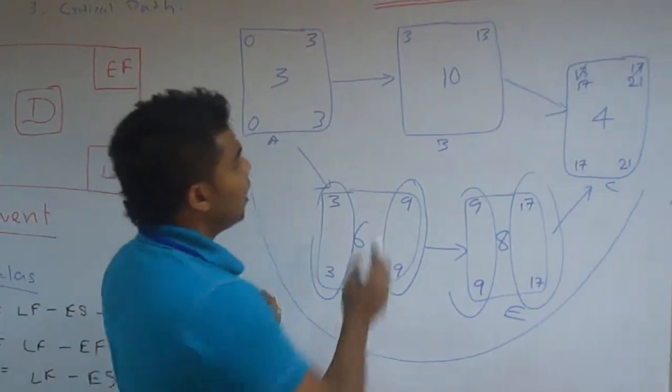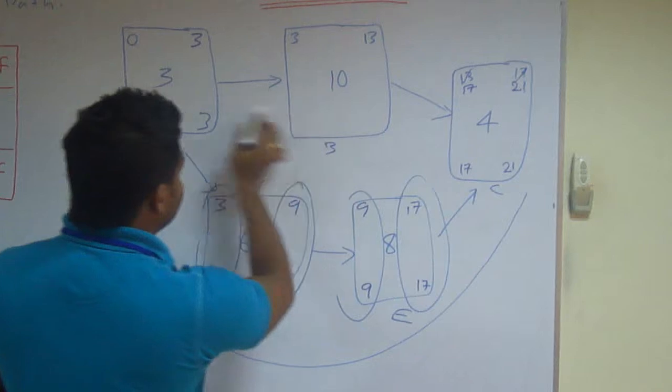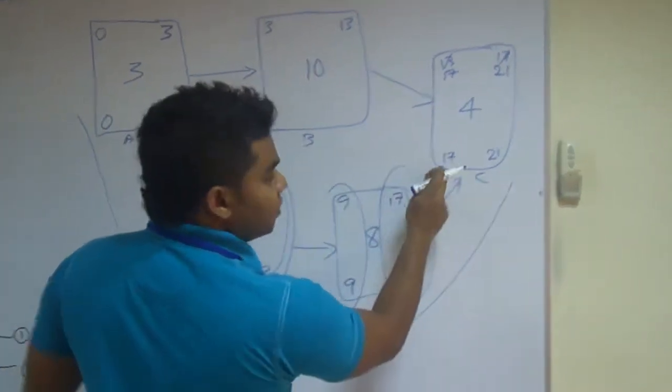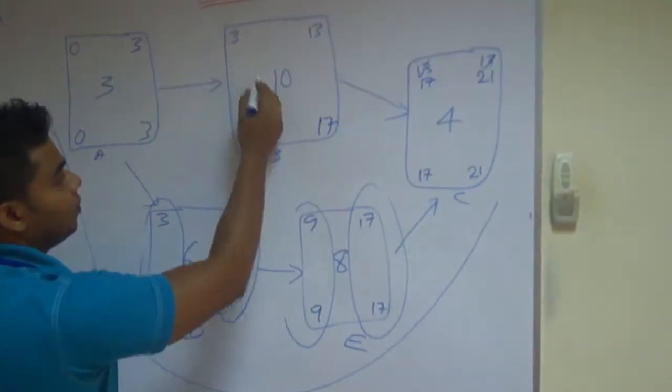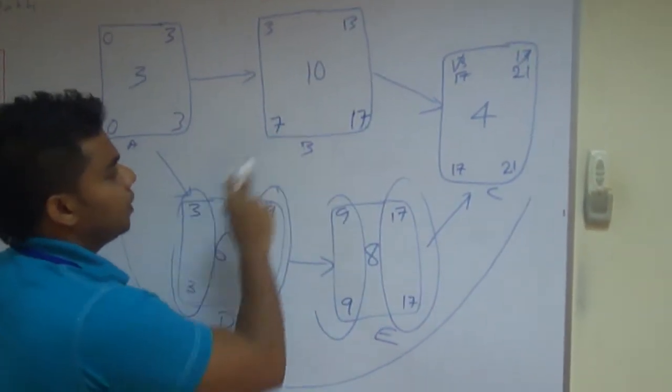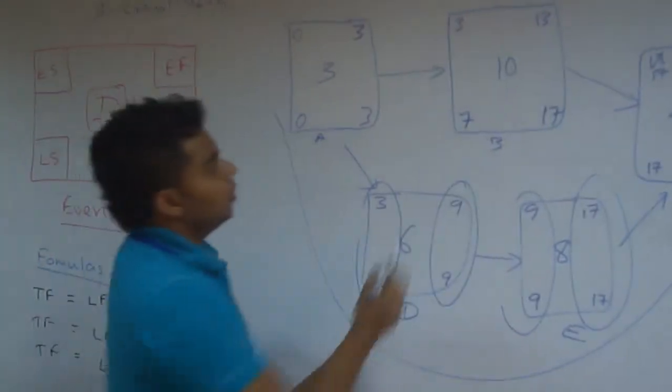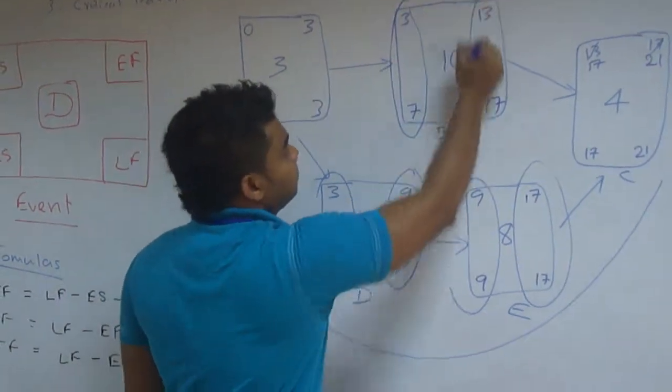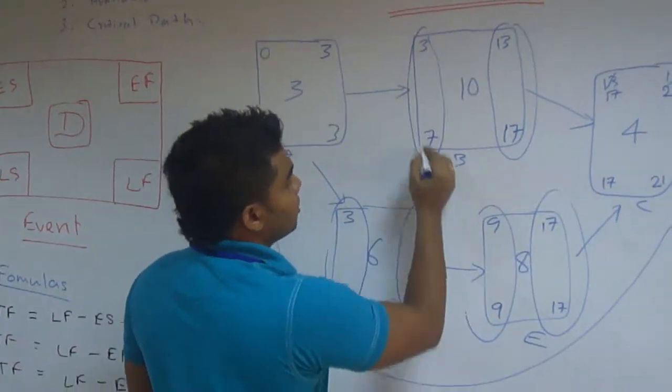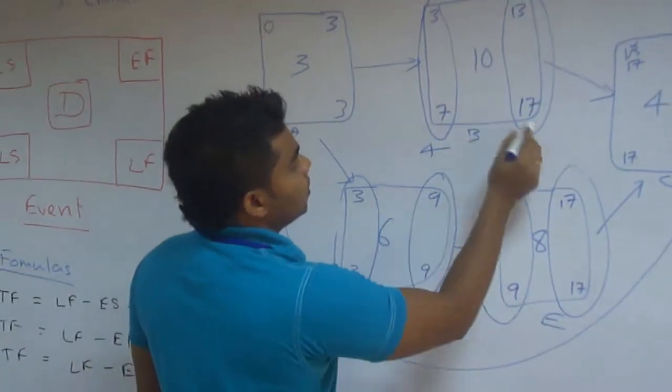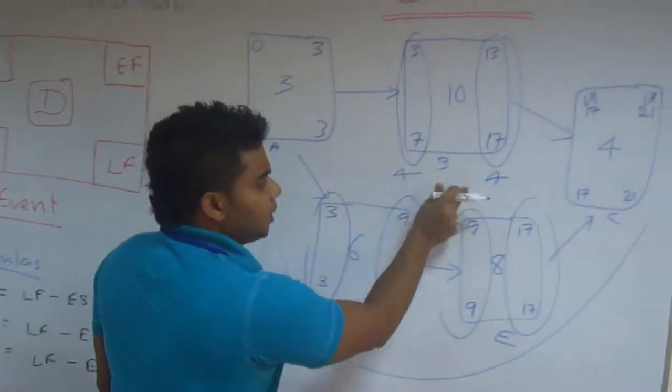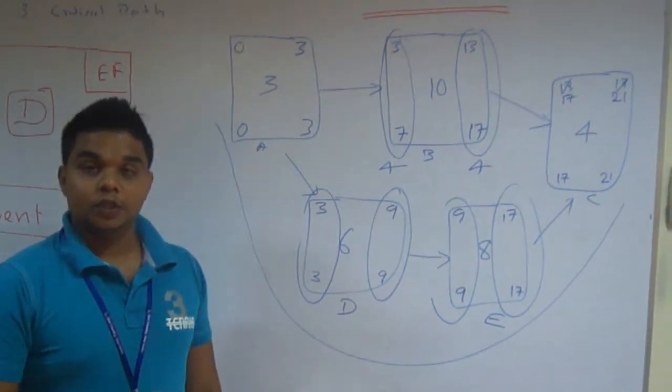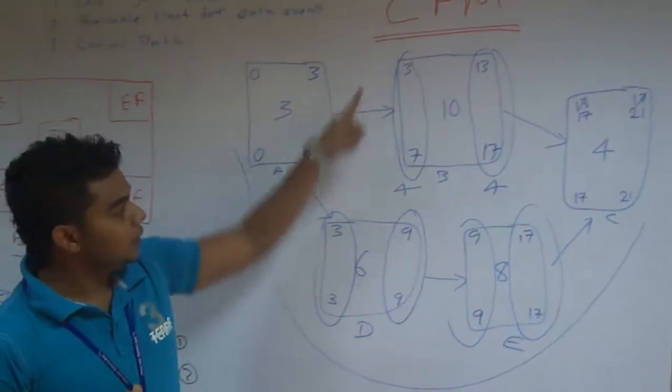But here you have to calculate. Now you are starting here at seventeen. That means you can finish it at seventeen. That means you can start here at seven. Right. Now you see a difference here. What's the difference? Seven minus three is four. Seventeen minus thirteen is four. Now this particular event has a float. A free float for this particular event that is four.